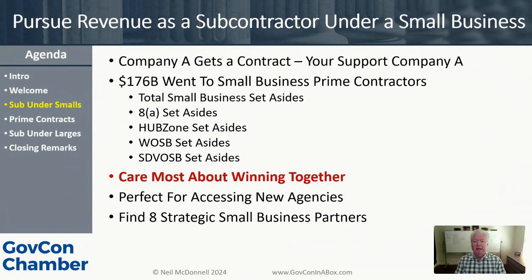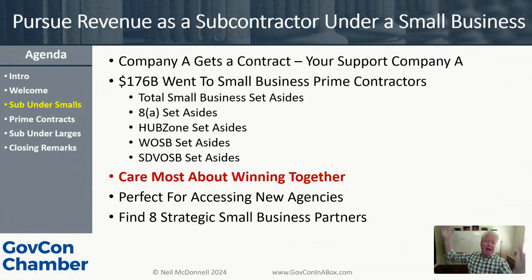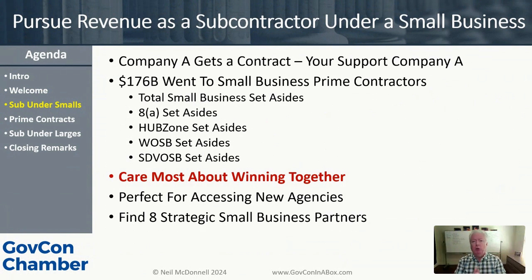This is important because the federal government awards contracts to prime contractors, and those prime contractors are one of two types: small businesses or large businesses. The SBA determines size standards. Last year — FY 2023 — $176 billion went to small businesses in actual contracts awarded to support the federal government.